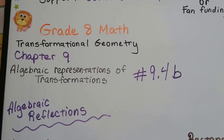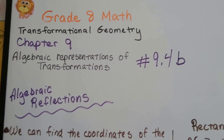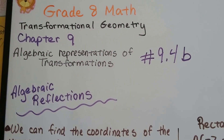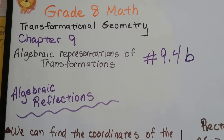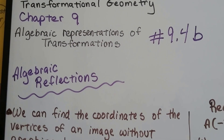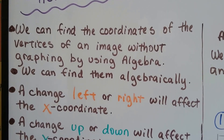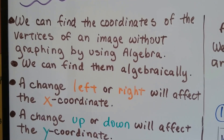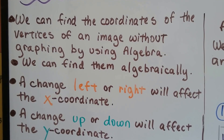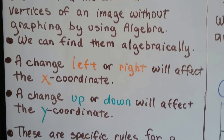Grade 8 math, number 9.4b. We've been doing algebraic representations of transformations. Now we're going to do reflections algebraically. We can find the coordinates of vertices of an image without graphing by using algebra — we can find them algebraically.